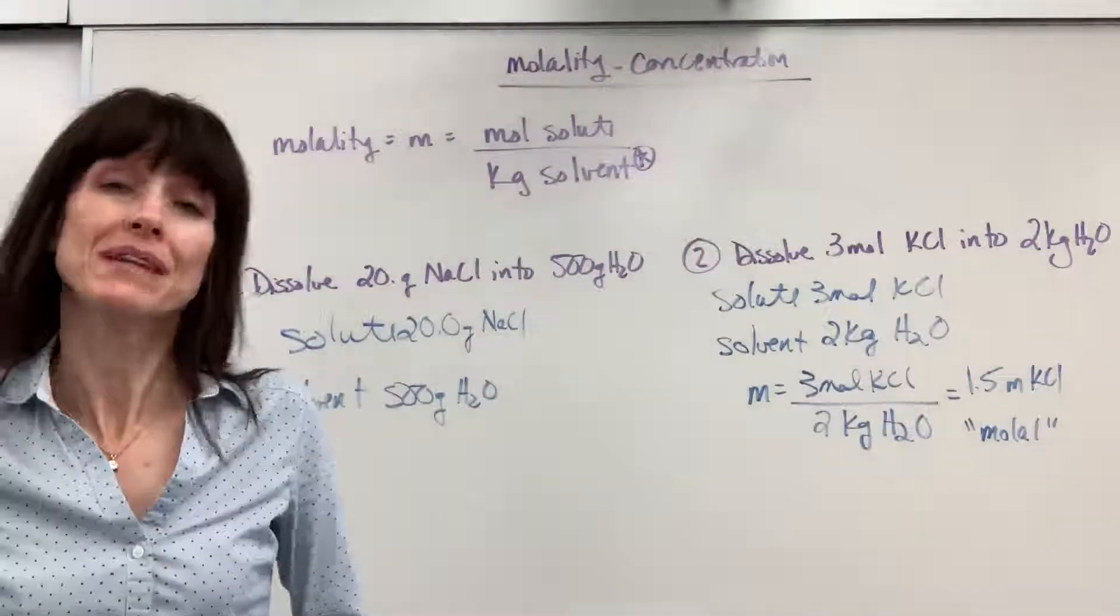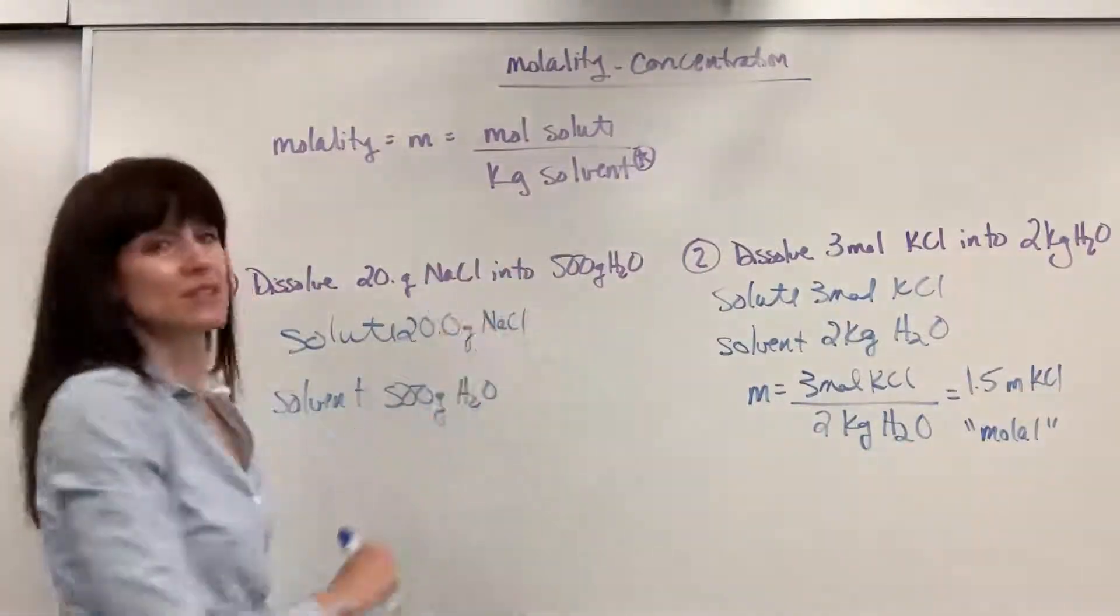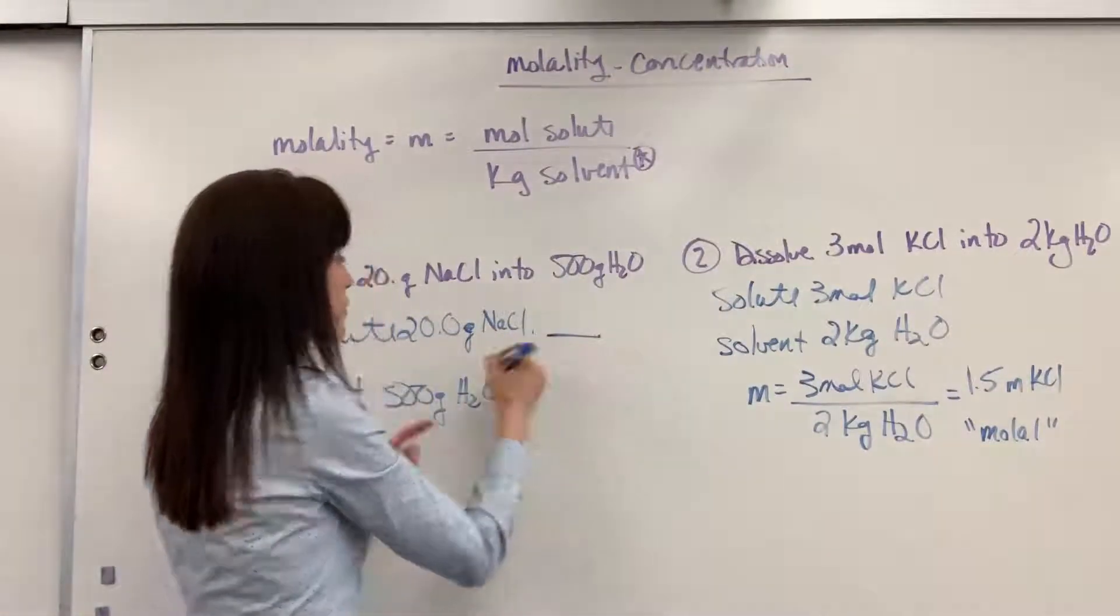Okay, so we identified solute and solvent. But now we need to get the correct units. I need moles of solute. I've got grams. So let's use molar mass. And we will go from grams to moles.